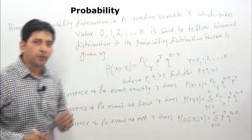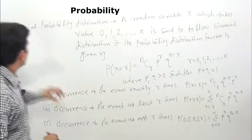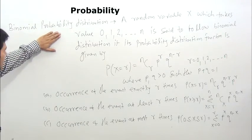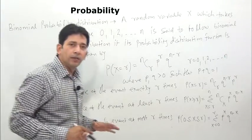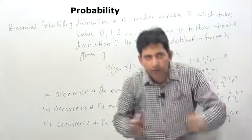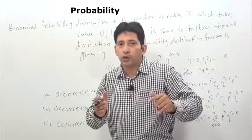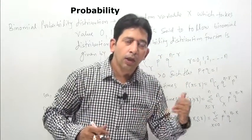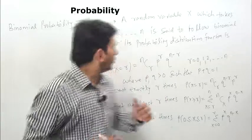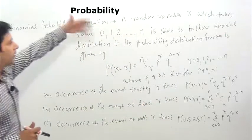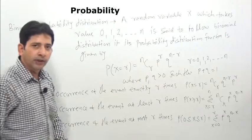In the next portion of probability: Binomial Probability Distribution. What is Binomial Probability Distribution? Normally, when there are independent events and the events increase, we use Binomial Distribution. There was a short trick — when events increase and are independent, we use Binomial Distribution.